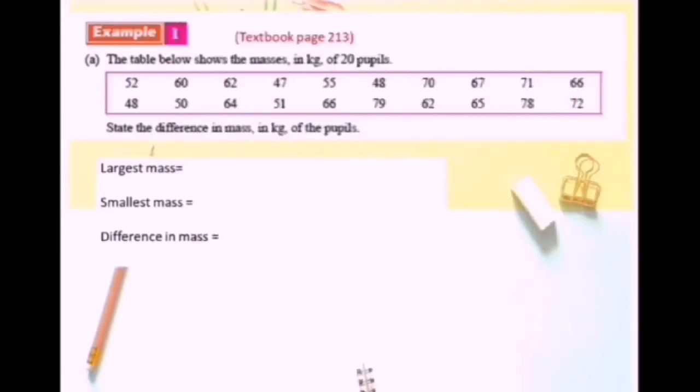Now we look at example 1. The table below shows the masses in kilogram of 20 pupils. State the difference in mass in kilogram of the pupils. So we find the largest mass, 79 kilogram. The smallest mass is 47 kilogram. The difference in mass is 79 minus 47 is equal to 32 kilogram.